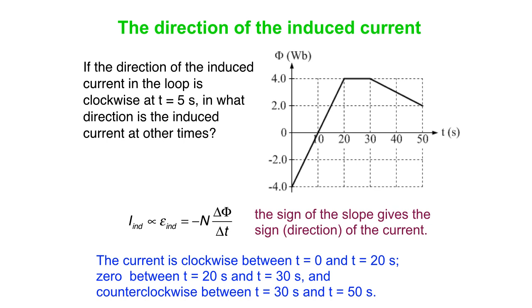That means the current is clockwise between t equals 0 and t equals 20 seconds. In fact, it's the exact same value because the slope doesn't change for that 20-second period. The slope is 0, so the induced current is 0 between t equals 20 and t equals 30 seconds. Then, for the last 20 seconds, the slope is negative instead of positive, so it's the opposite sign. So if it was clockwise at t equals 5 with a positive slope, it must be counterclockwise for all these times between 30 seconds and 50 seconds.